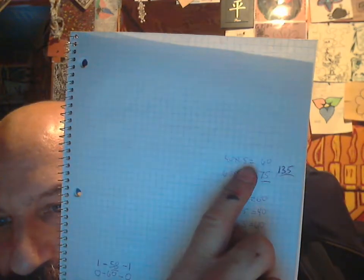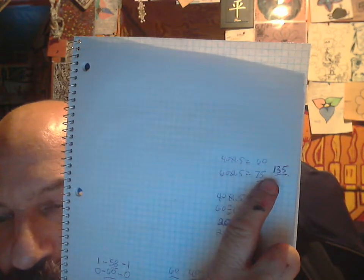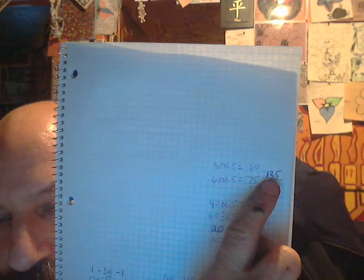40 times 1.5 equals to 60. 60 times 1.5 equals to 75, equals to 135, equals to ace. Add 6, equals 141.